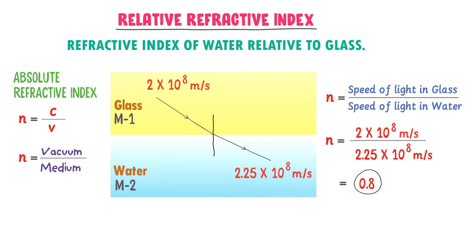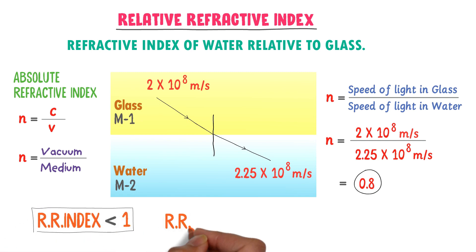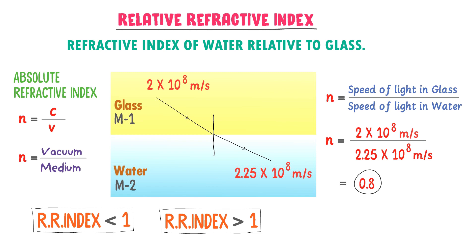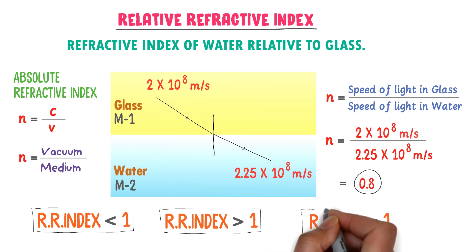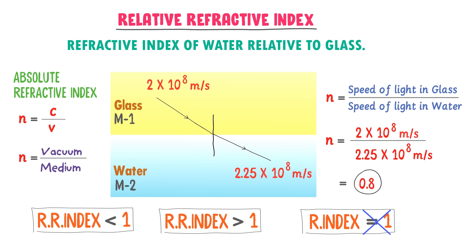Remember that the relative refractive index can be either less than 1 or greater than 1, depending on the two media being compared. However, neither the absolute refractive index nor the relative refractive index will ever be exactly equal to 1. I hope you have learned all these concepts.